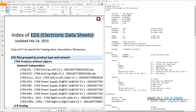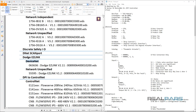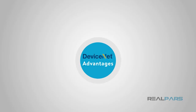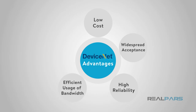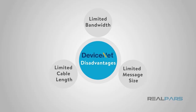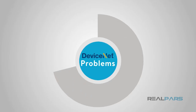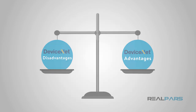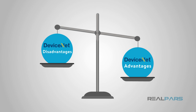DeviceNet uses Electronic Data Sheets, or EDS — simple text files that contain all the information to identify a device and assist in commissioning them onto the network. The advantages of DeviceNet are low cost, widespread acceptance, high reliability, efficient use of network bandwidth, and power available on the network. The disadvantages are limited bandwidth, limited message size, and maximum cable length. It is stated in many documents that 90% to 95% of all DeviceNet problems are one of two things: a cabling issue, or not having the correct EDS file registered in RS Networks for DeviceNet. This makes DeviceNet a great network when looking at the overall picture.